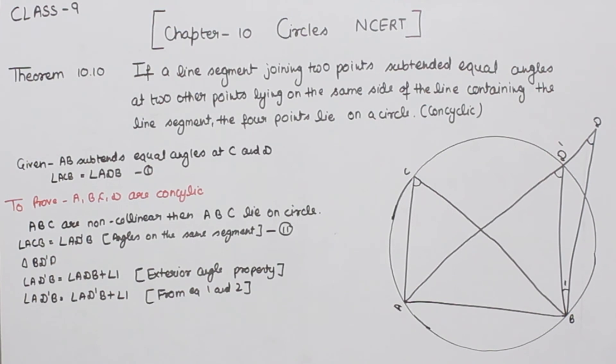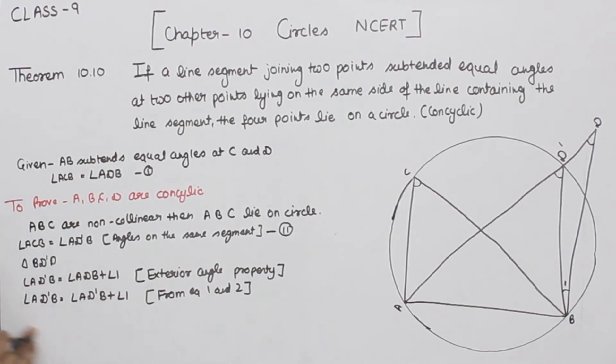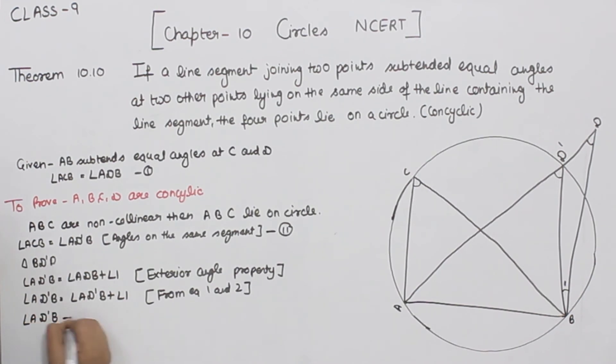We are going to transpose. Angle ADB minus angle ADB is equal to angle number one. If we subtract, then we have zero degrees, or you can say zero is equal to angle number one.